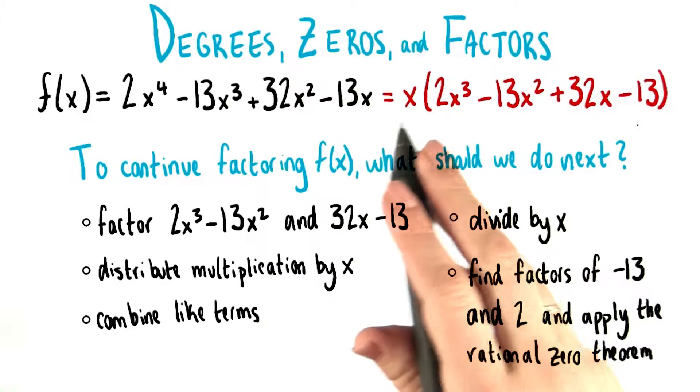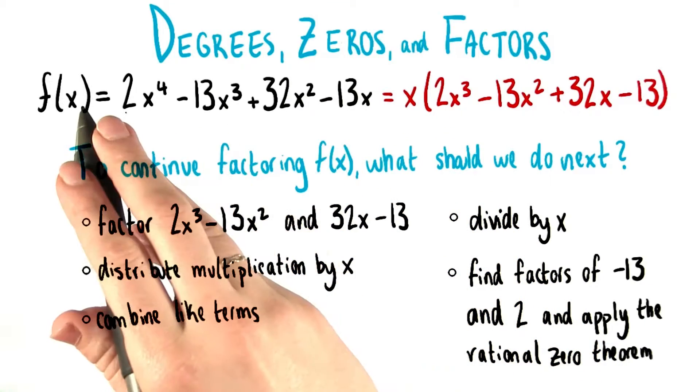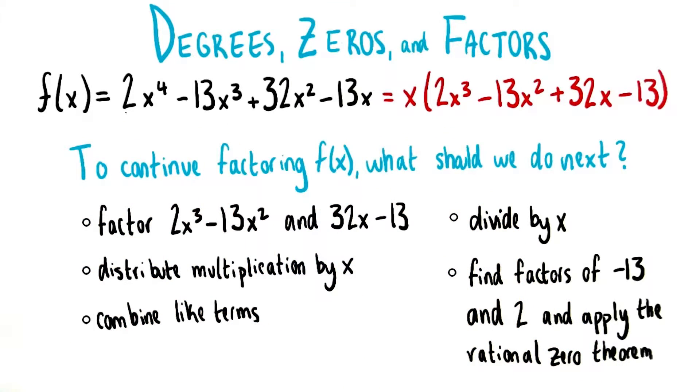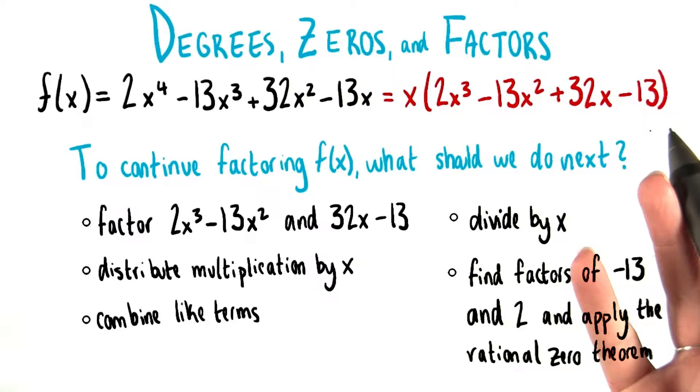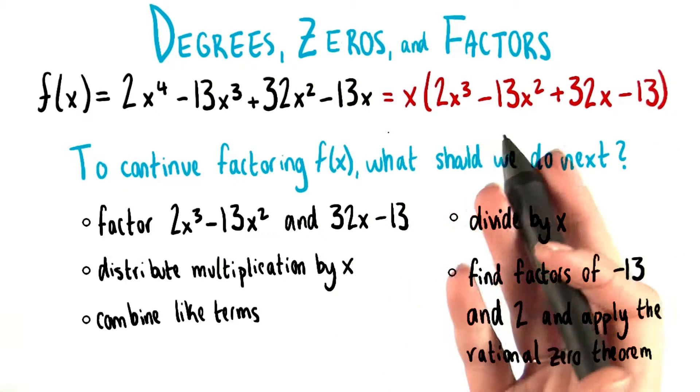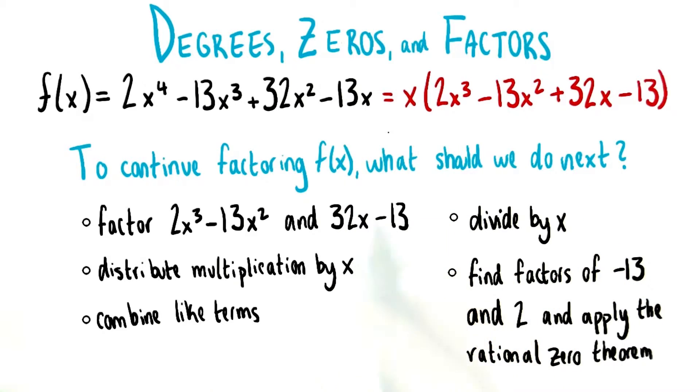We've already found one of the factors of our original polynomial. So what should be our next step in continuing this factoring process?